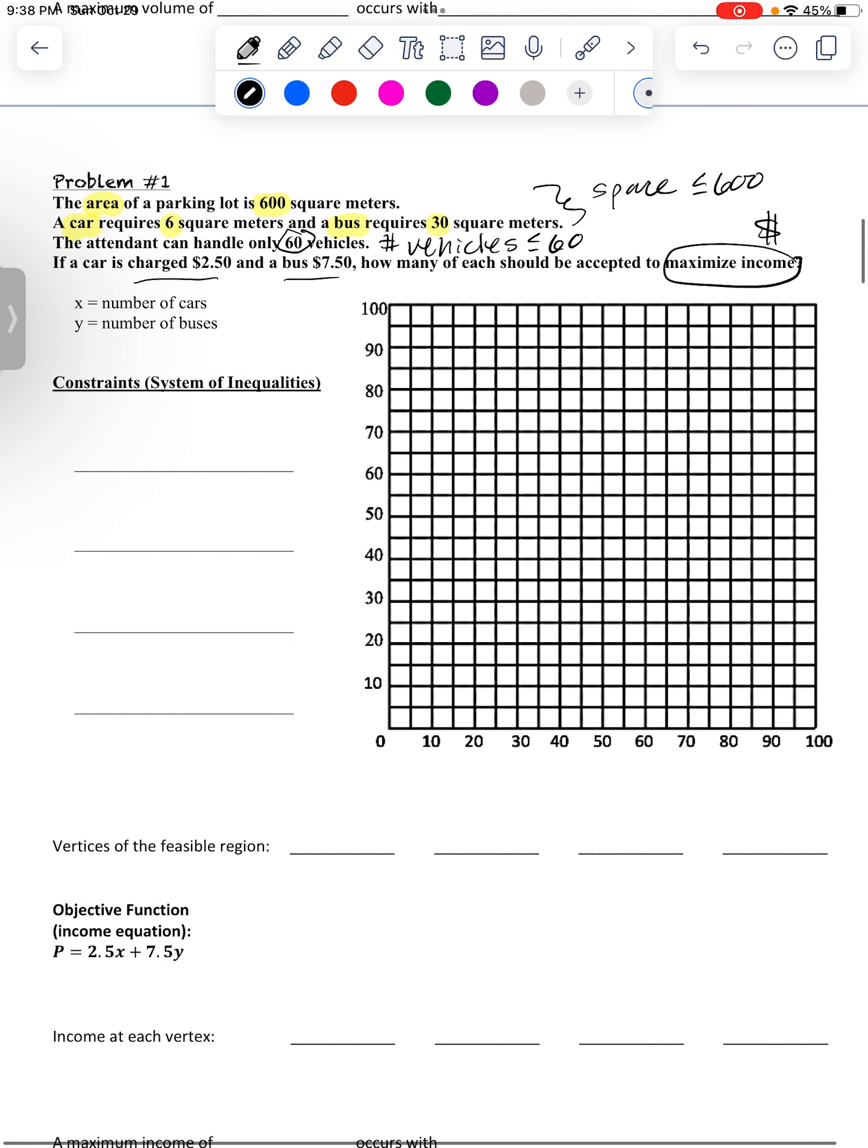So anything to do with money is going to go in our objective function. That's why you're going to see here the $2.50 and the $7.50 down in this profit equation. So those don't go onto your graph. That's going to be what we plug it into later. So first of all, you have to do kind of reasonable domain, meaning you can't have less than nothing. So if we're going to let x equals the number of cars and y equals the number of buses, then we want to remember that we need to have greater than or equal to zero cars and also greater than or equal to zero buses because you can't have less than none.